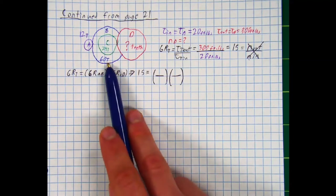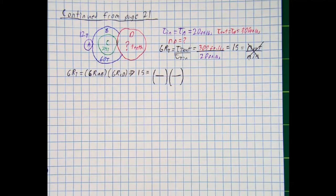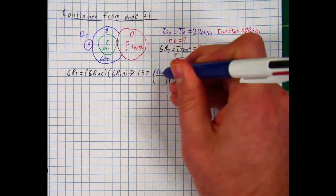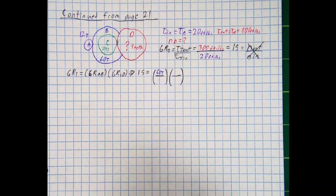And what is my gear ratio from A to B? Well, that's just going to be my number of teeth output divided by my number of teeth input. And so that's 60 teeth divided by 12 teeth.